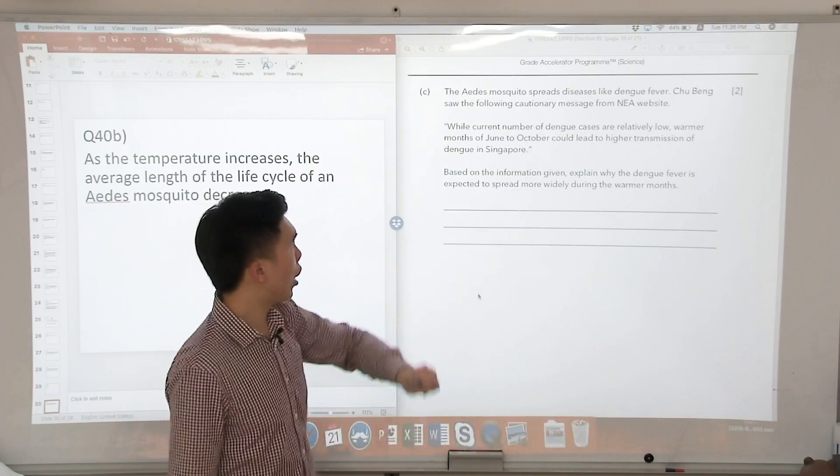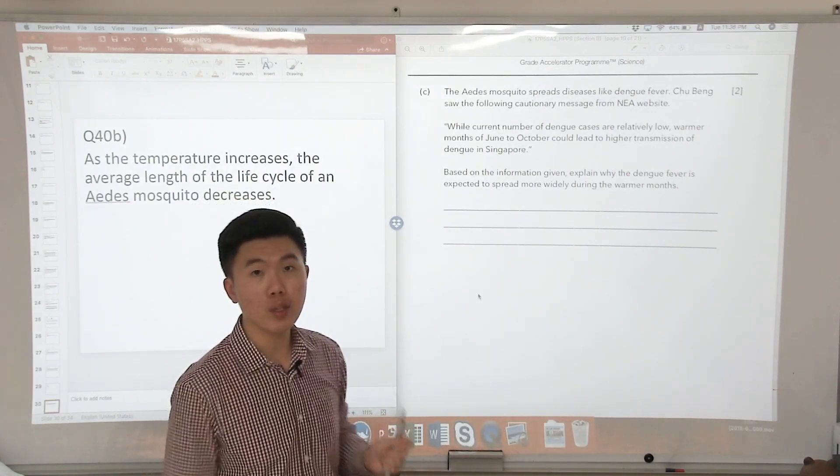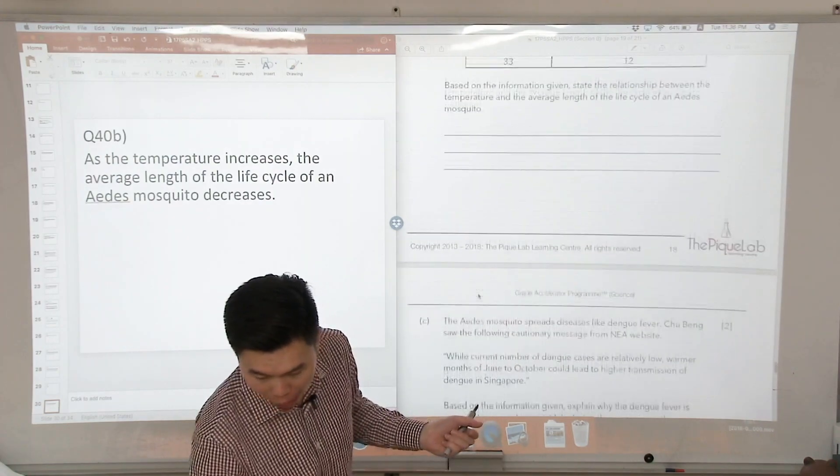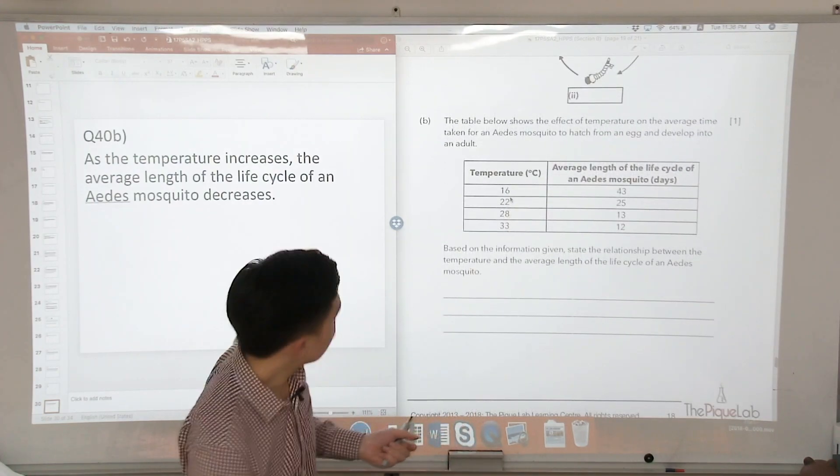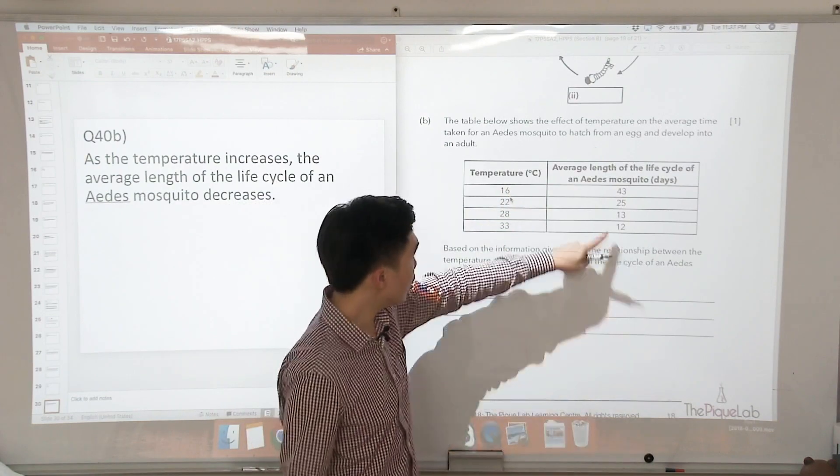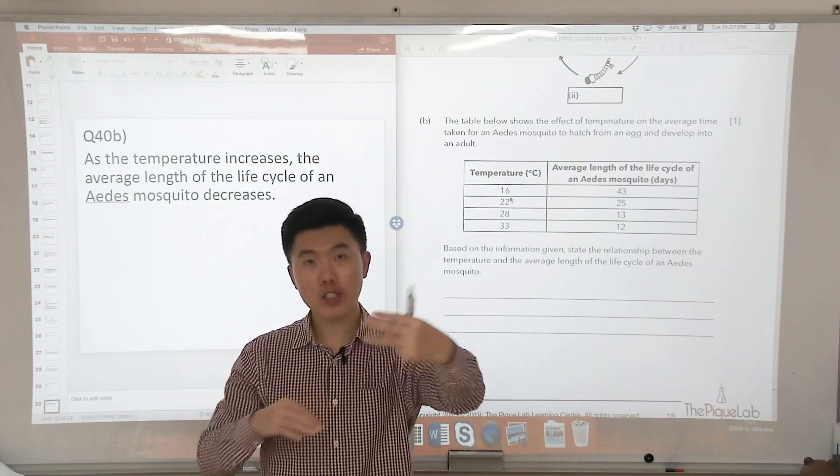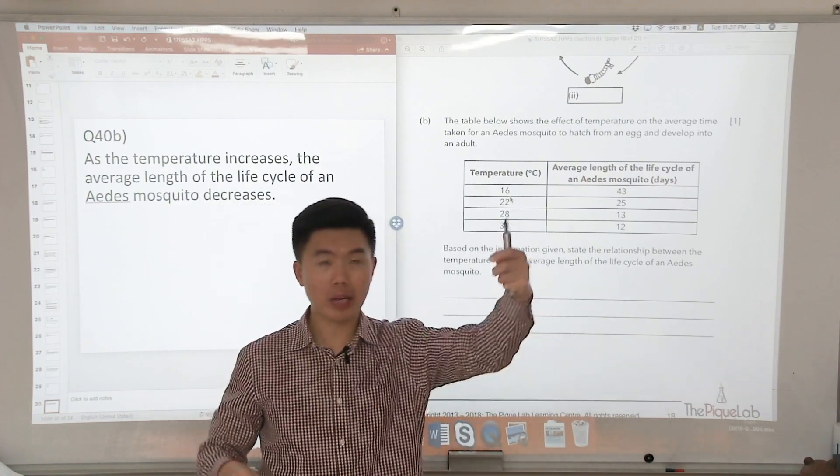So based on the information that was given, explain why dengue fever is expected to spread more widely during the warmer months. So let's look at the warmer months. What happens when the temperature is higher? The average life cycle of the Aedes mosquito is shorter.